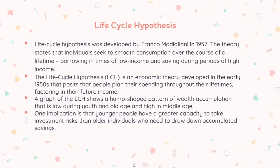Low income means that an individual can borrow, and high income means that they can save. The Life-Cycle Hypothesis is an economic theory developed in the early 1950s that posits that people plan their spending throughout their lifetimes, factoring in their future income. A graph of the LCH shows a hump-shaped pattern of wealth accumulation that is low during youth and old age and high in middle age. One implication is that younger people have a greater capacity to take investment risk than older individuals who need to draw down accumulated savings.